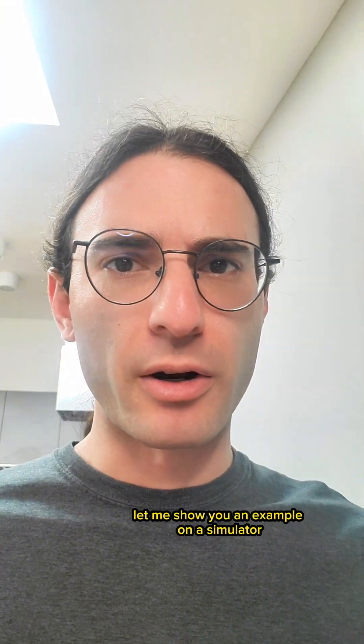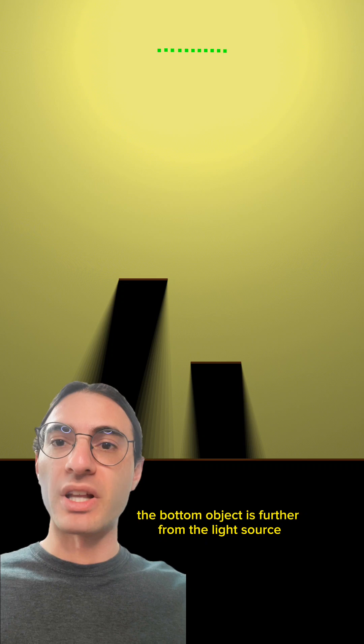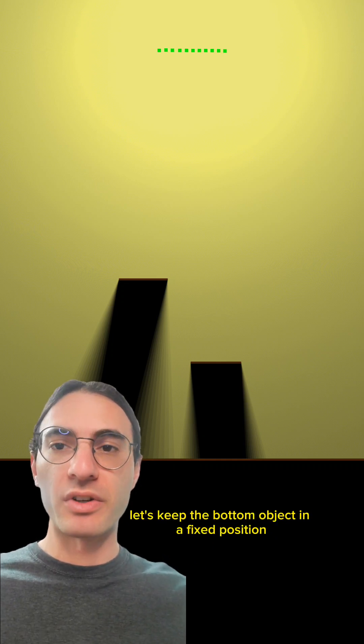Let me show you an example on a simulator. So here we have two objects with an extended light source up above. The bottom object is further from the light source and the top object is closer. Now, for this demonstration, let's keep the bottom object in a fixed position.